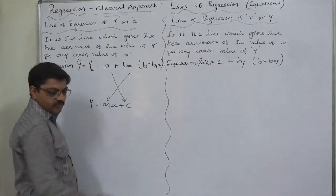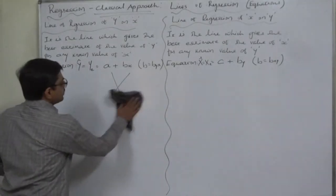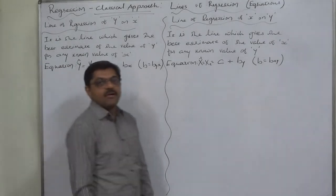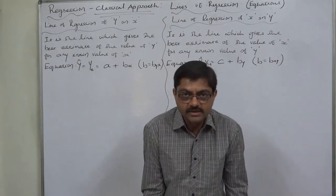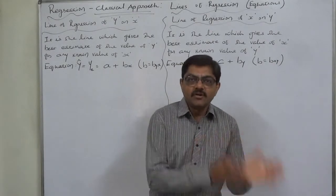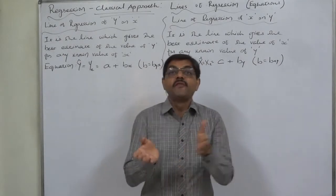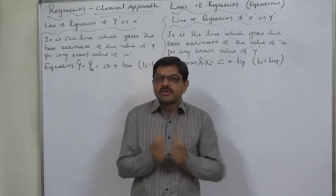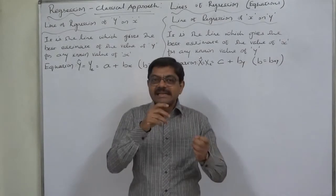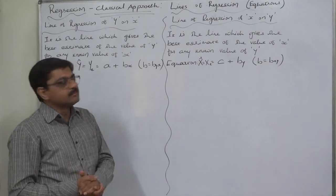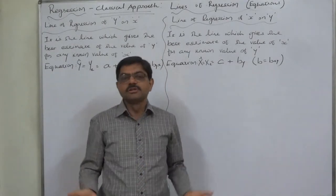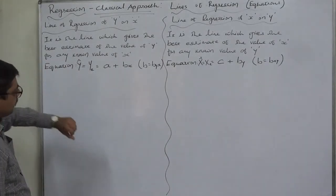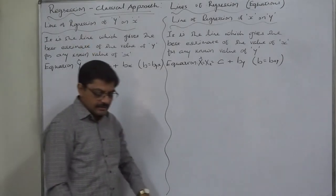In coordinate geometry, M denotes the slope of the straight line. Similarly, in regression, the coefficient of regression stands for the slope of this straight line. So the coefficient of regression means the slope of the line of regression, also called the slope of the best line. Remember these terms, as a paper setter may use them to make a question tougher.